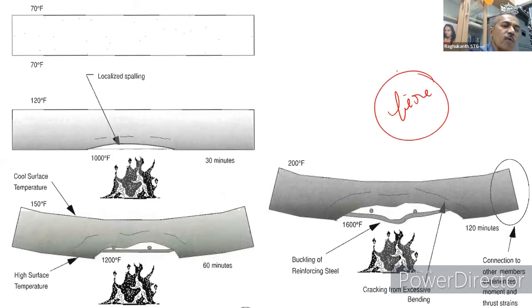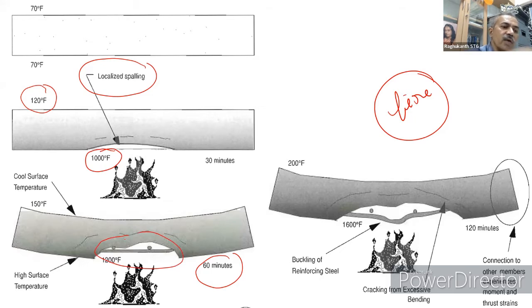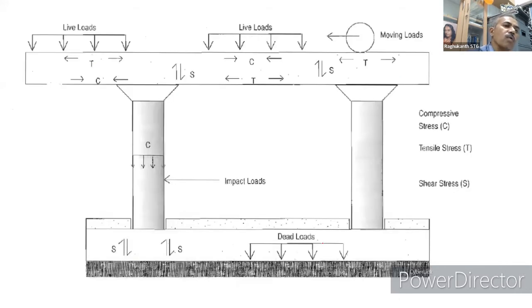Under fire, after about 60 minutes, the concrete cover spalls and steel gets exposed; at 120 minutes, the steel melts, connections fail, and the structure can collapse. Fire damage is very difficult to repair and is a major challenge. In summary, corrosion, temperature differences, and fire are key causes of structural damage, in addition to service loads.